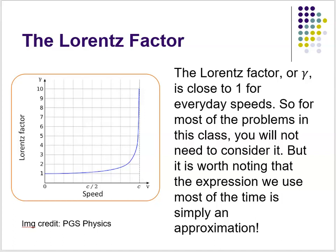Here's a plot of the Lorentz factor as a fraction of the speed of light. You can see that once you get to half the speed of light, it really starts to take off — and when you approach the speed of light, the Lorentz factor blows up and approaches infinity. It's close to 1 for everyday speeds, so for most problems in this class you won't need to consider it. But the expression we use most of the time is really an approximation that breaks down once speeds start to approach c.